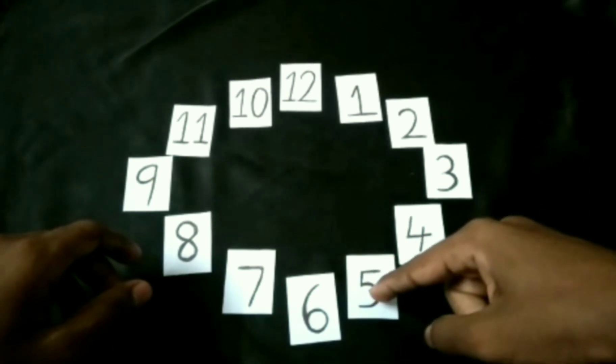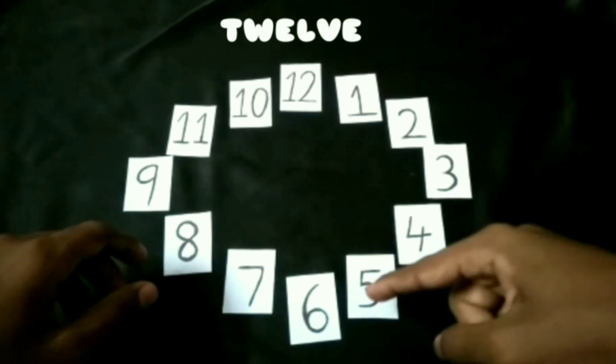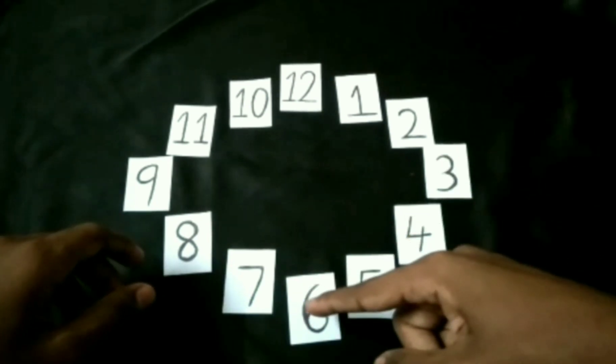By now you are on the number 5. Likewise, if you think of the number 12, then spell T-W-E-L-V-E. By now you are on the number 6.